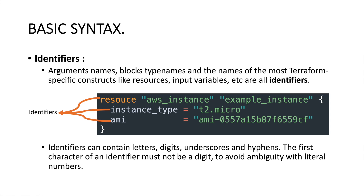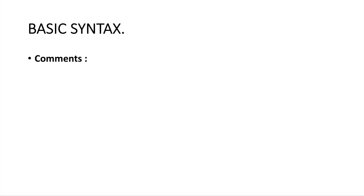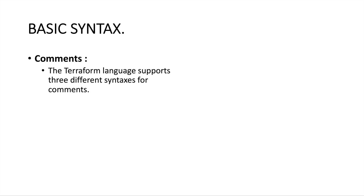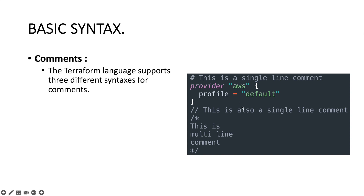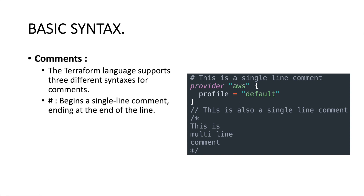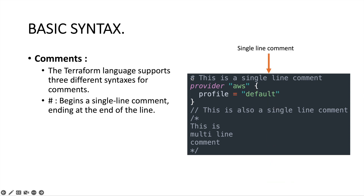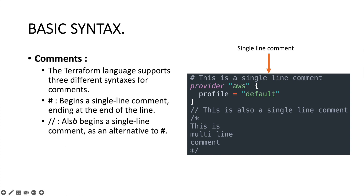The next component is comments. We also have the option of providing comments in Terraform code. The Terraform language supports three different syntaxes for comments. For example, we can use a hash symbol to indicate a single-line comment — you can see the hash at the beginning of the line, which indicates that line is a comment. We can also use a double slash to indicate a single-line comment.